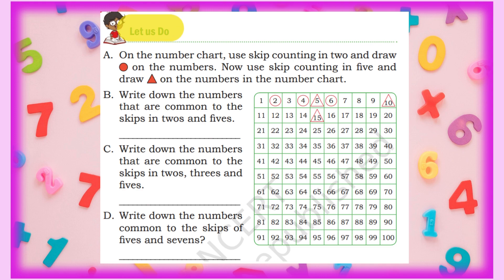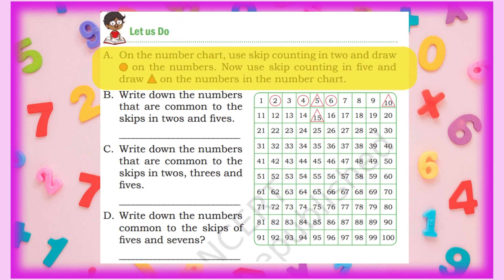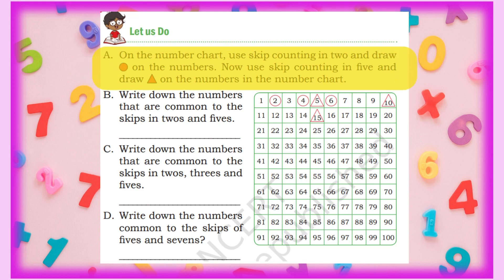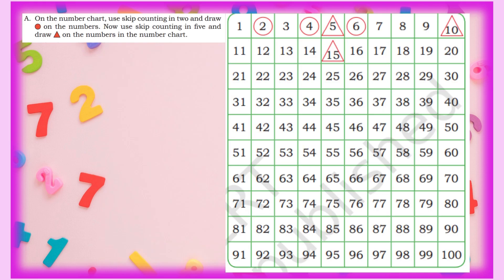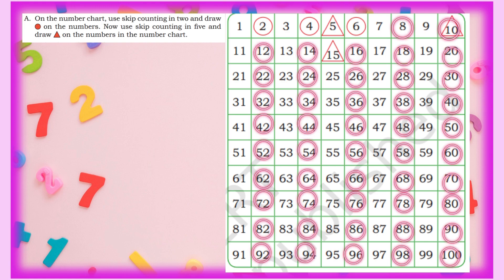So we have some questions here to solve. The first question is: on the number chart, use skip counting in 2s and draw a circle on the numbers. We skip every alternate digit and circle the second number. So we circle 2, then skip one and circle 4, then 6, 8, 10, 12, 14, 16, 18, 20, 22, 24, 26, 28, 30, and so on up to 100.